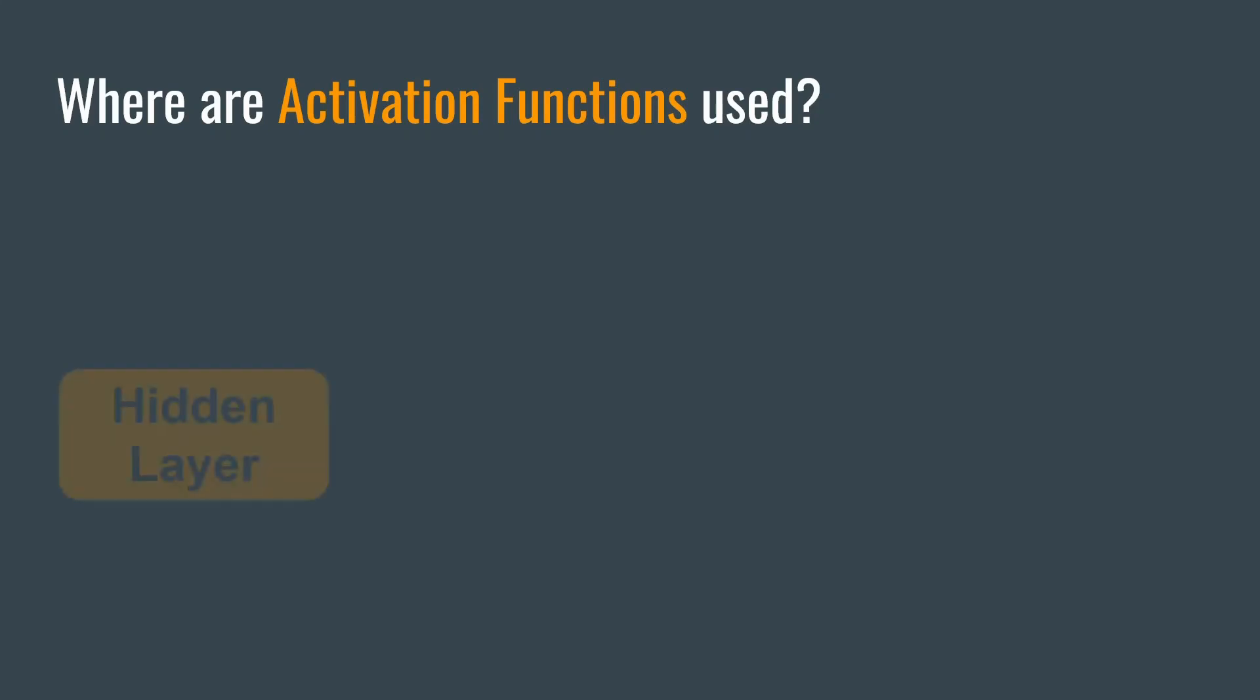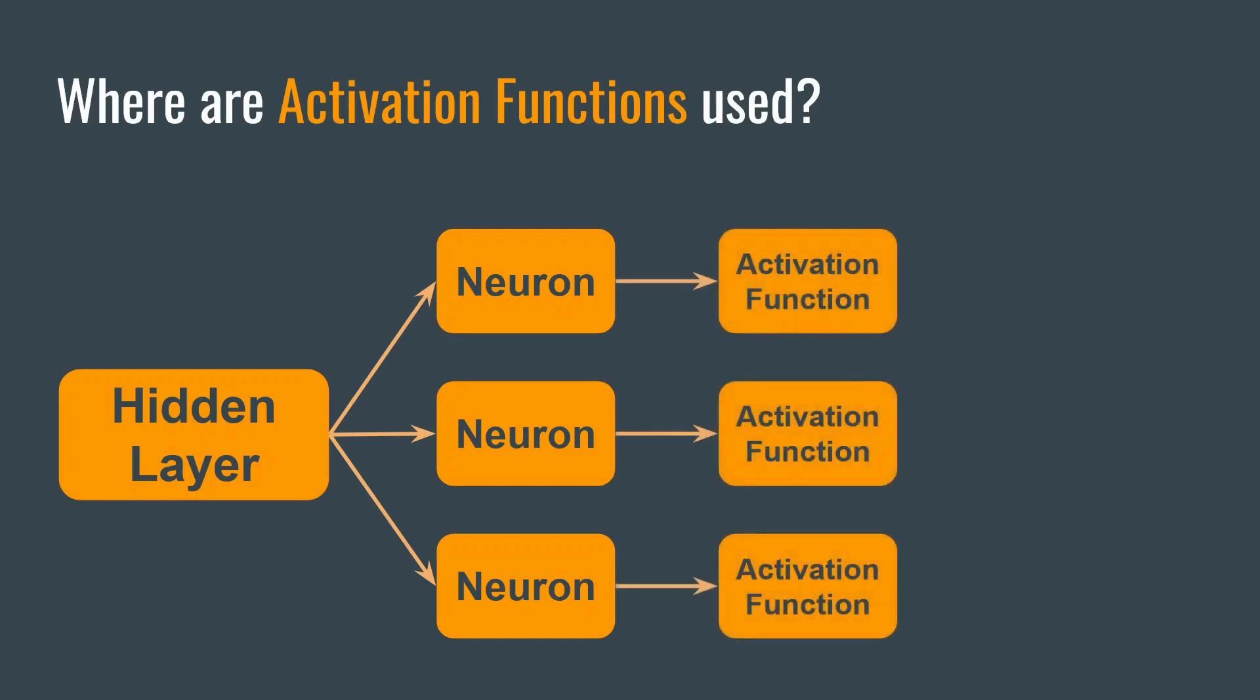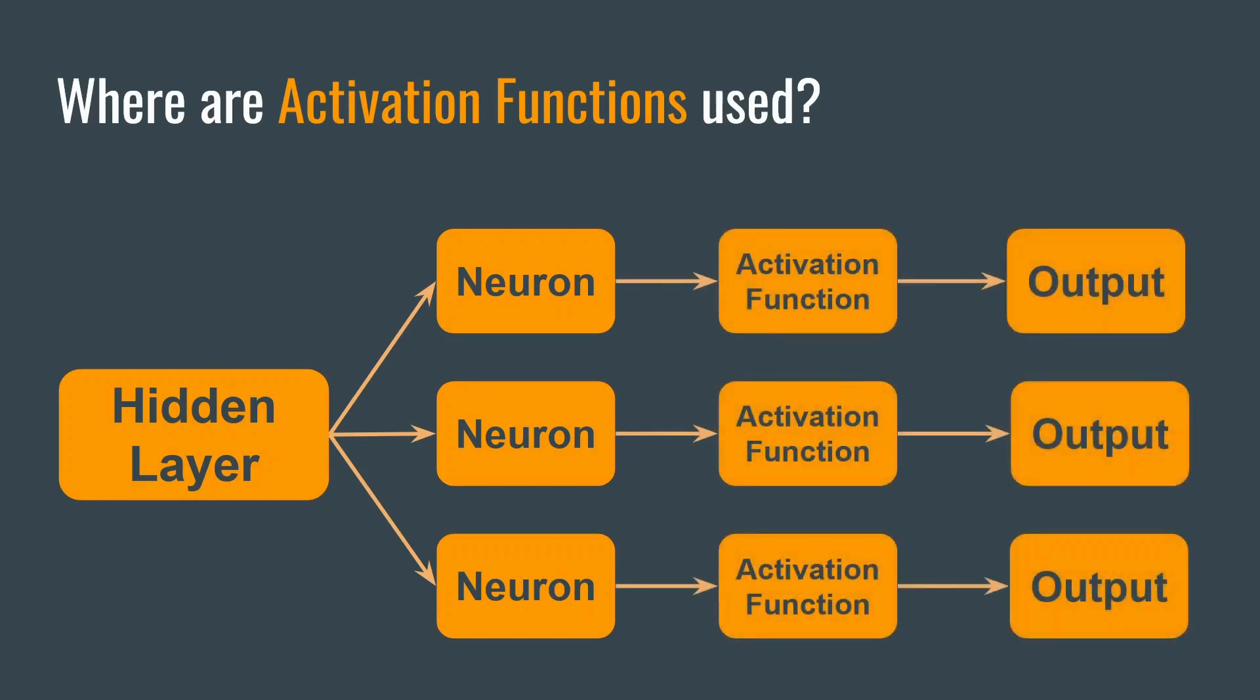Concerning this particular hidden layer, it consists of multiple neurons. When the inputs are fed to this hidden layer, each neuron gives an output value. Instead of directly feeding this output to the next layer, it is first passed through an activation function. After that, these outputs, or the final outputs, are passed to the next layer.